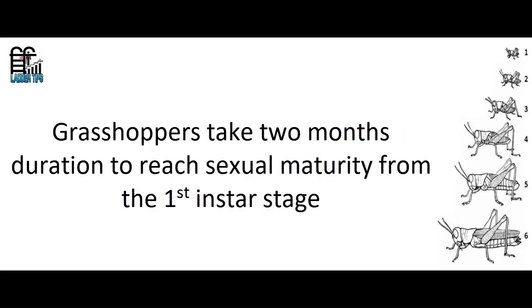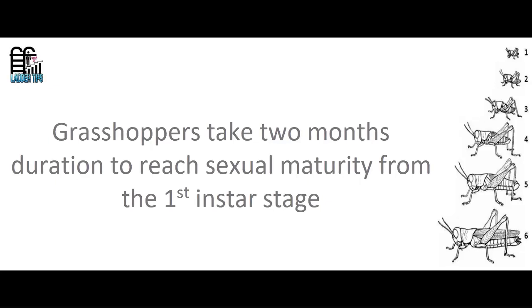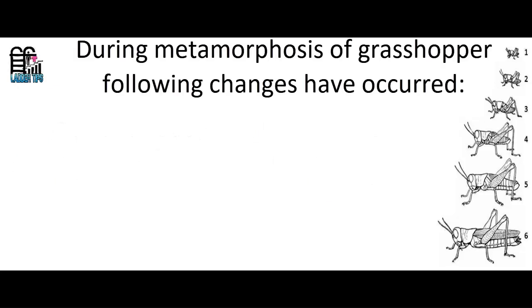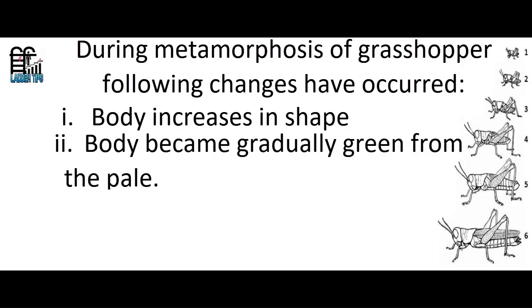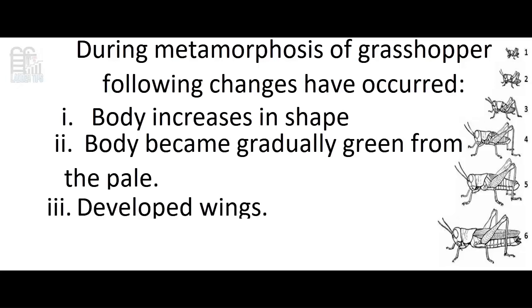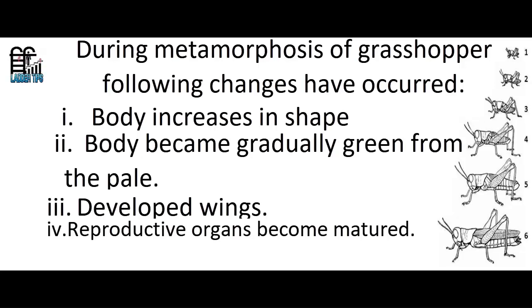Grasshoppers take two months to reach sexual maturity from the first instar stage. During metamorphosis of the grasshopper, the following changes occur: the body increases in size, the body gradually becomes green from pale, wings develop, and reproductive organs become matured.